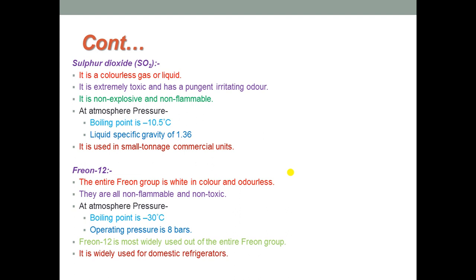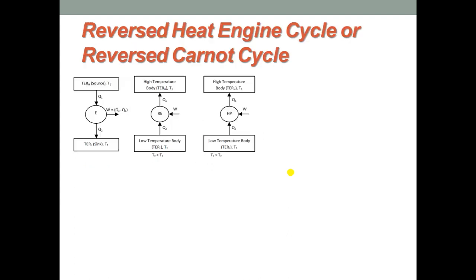This covers the different types of refrigerants commonly used in practice. Moving on to the reversed heat engine cycle, or reversed Carnot cycle. We make use of a block diagram displayed on the screen with three diagrams. The first diagram represents a heat engine working between two heat sources — one at high temperature (source) and one at low temperature (sink). Heat is drawn from the source, work W is produced by the reversible heat engine, and heat is rejected to the sink at temperature T₂. When this reversible heat engine is reversed to work in the opposite direction, we get refrigerators and heat pumps.